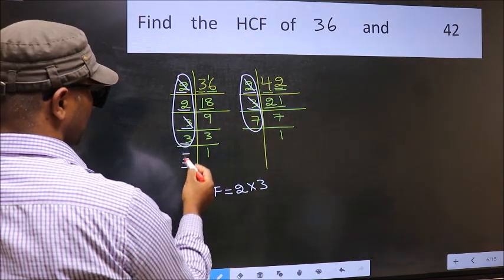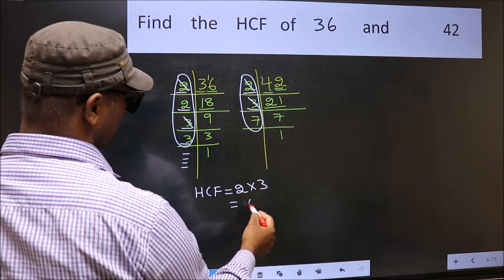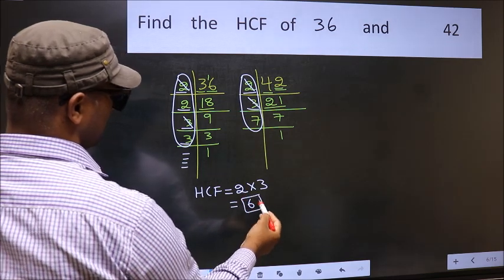No more numbers have been left out. So our HCF is 2 into 3, 6. 6 is our HCF.